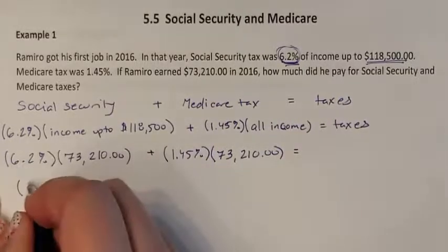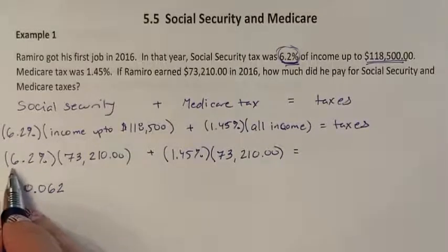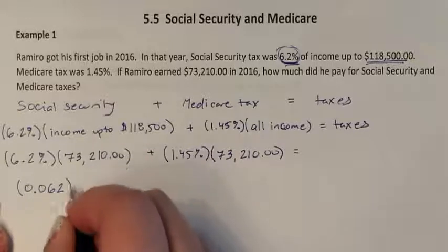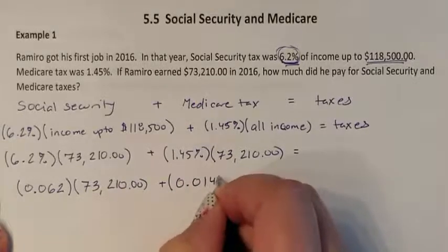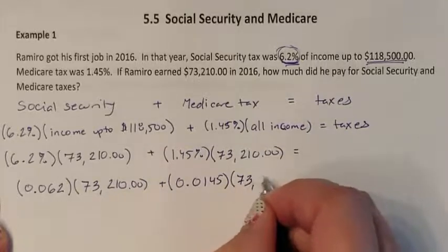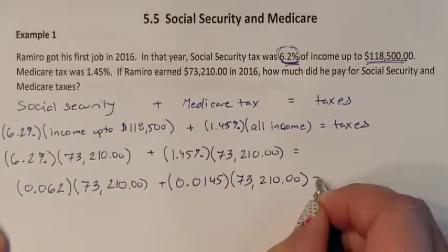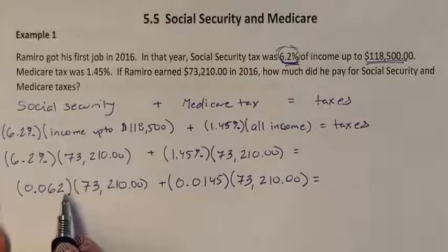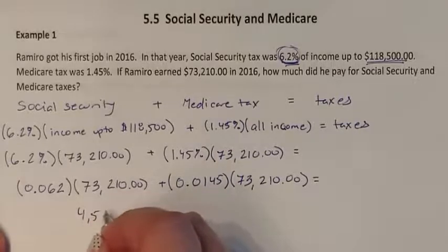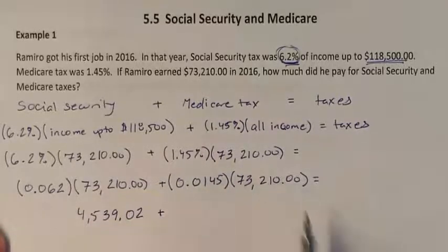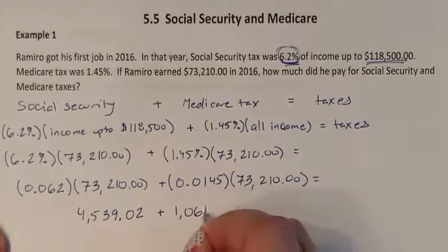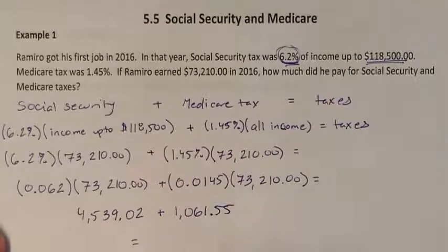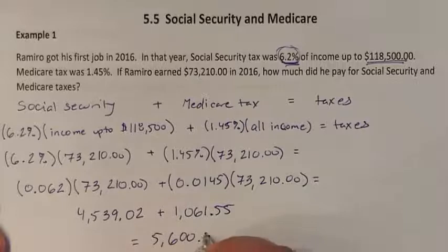6.2% as a decimal is 0.062 — the decimal is moved two places to the left. We multiply by his entire salary since he did not reach the cap. For Medicare, 1.45% becomes 0.0145, multiplied by his entire salary. So 0.062 × $73,210 = $4,539.02, and 0.0145 × $73,210 = $1,061.55. Adding these together gives his total taxes of $5,600.57.